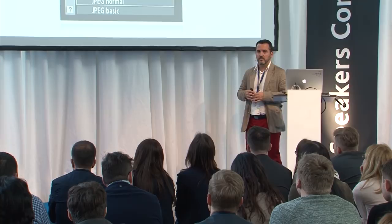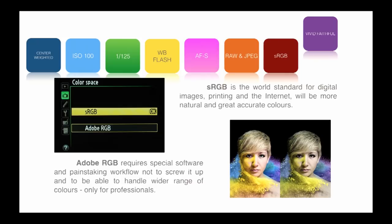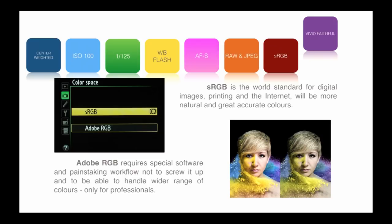sRGB is a color space format that will make your picture look a little more vivid, more alive, and brighter — more catchy. If you use Adobe RGB, that is for people who use Photoshop and want to edit the picture heavily. But if you are not a Photoshop user, keep it simple and don't lose time.